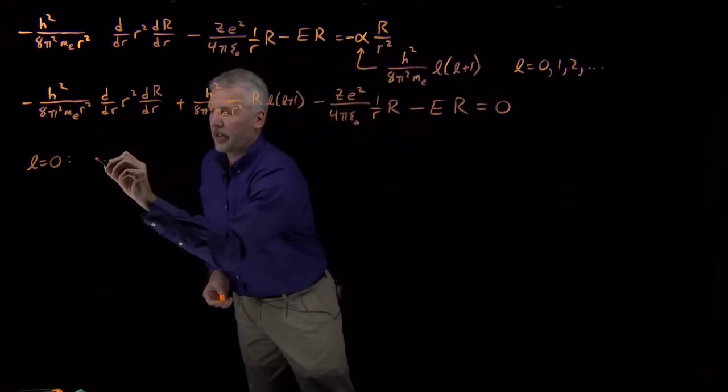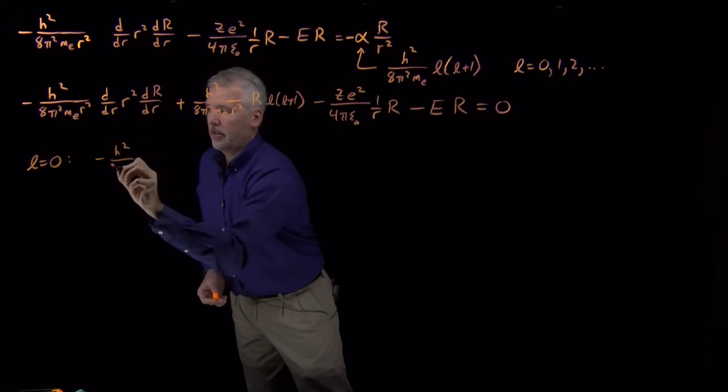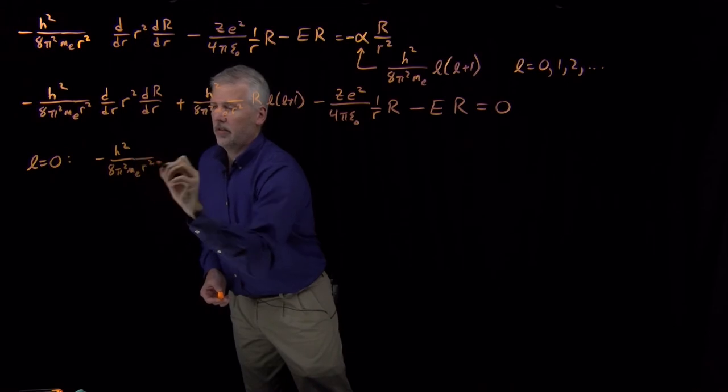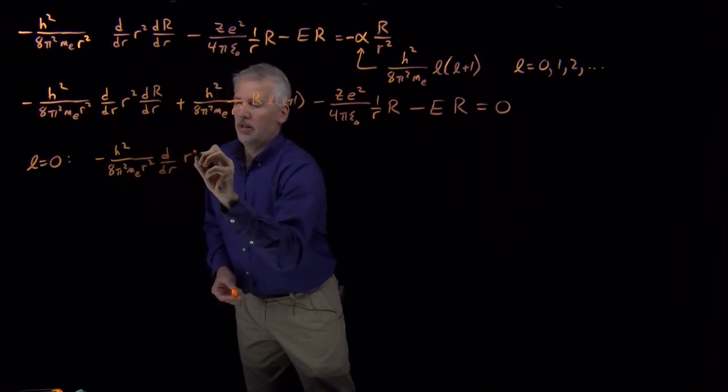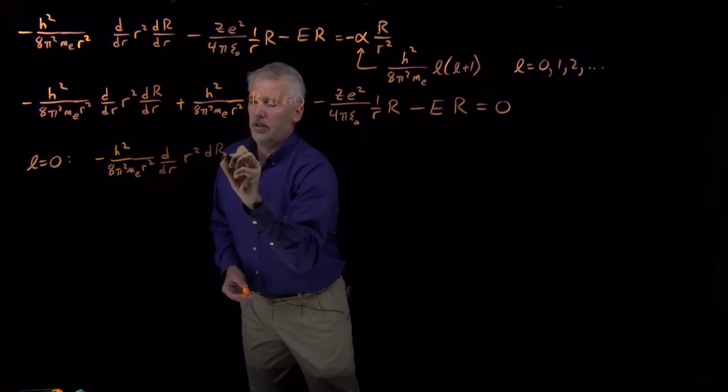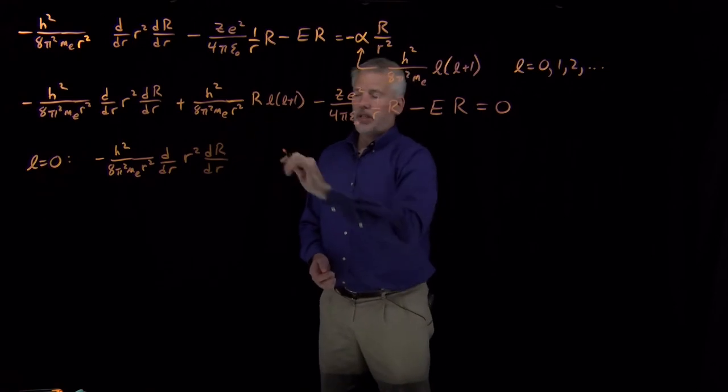So my differential equation looks like constants times d/dr, r squared, derivative of capital R with respect to R. Second term goes away.